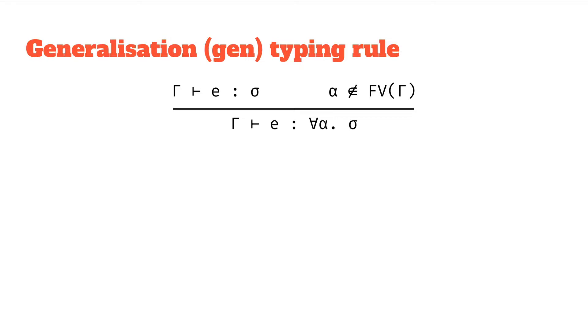So let's take a look at the rule, as we have for previous videos. We've got some expressions, we've got some types, and note the type at the bottom is this for-all alpha sigma, so we've actually added this for-all alpha qualifier to the type.